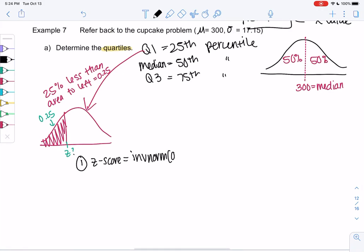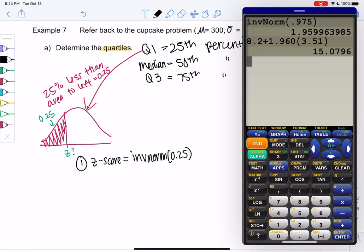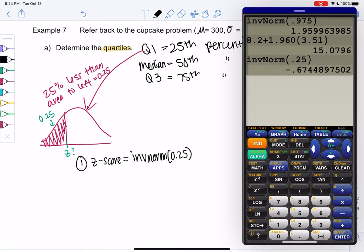The z-score is from inverse norm, because we're going backwards, of area to the left, which is 0.25. We already have left area, so that saves us some time on this one. Second distribution, inverse norm, 0.25. And we get a z-score of negative 0.674.